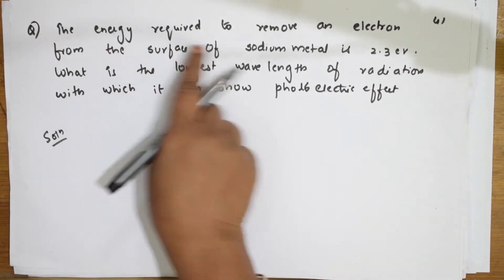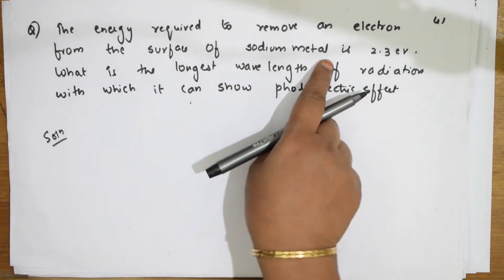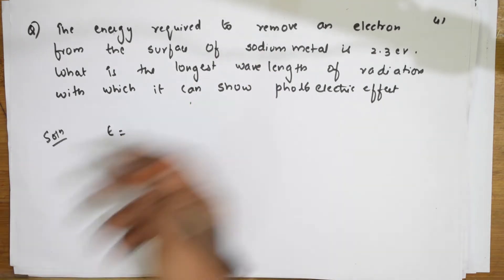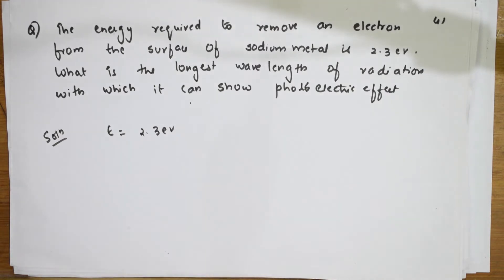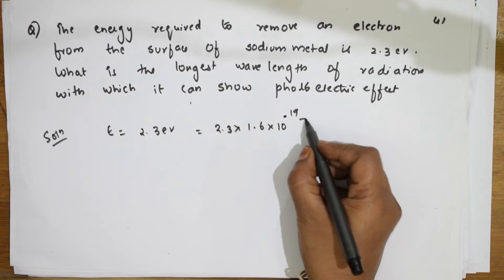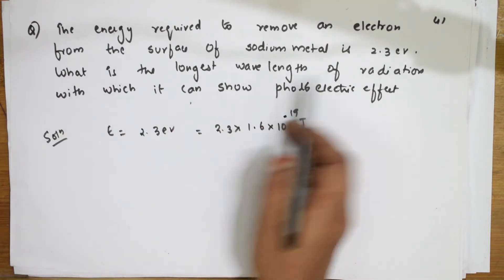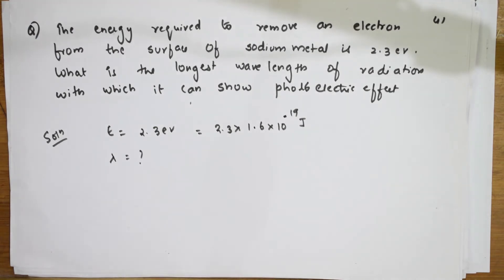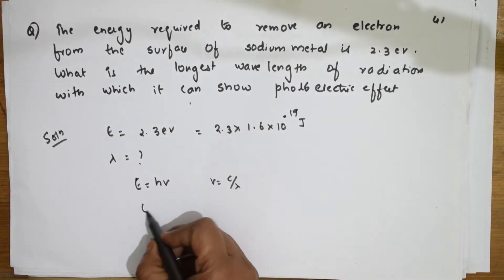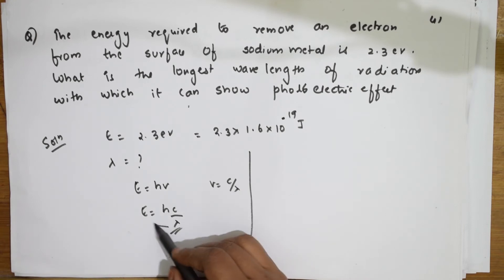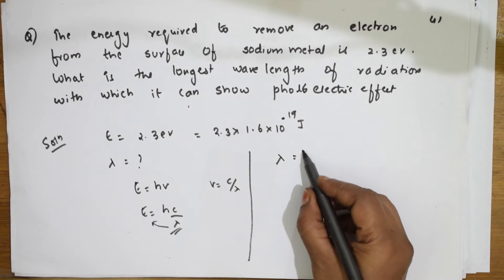The energy required to remove an electron from the surface of sodium metal is 2.3 electron volts. To convert to joules, multiply 2.3 by 1.6×10⁻¹⁹ joules. What is the longest wavelength of radiation with which it can show the photoelectric effect? I need to calculate lambda. The formula is E = hν, and since ν = c/λ, this becomes E = hc/λ. Therefore, λ = hc/E.